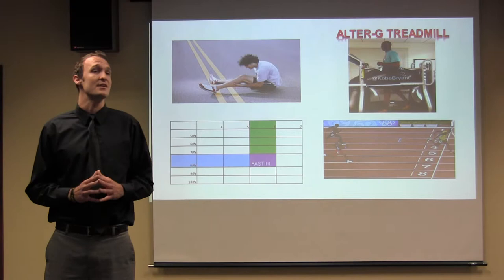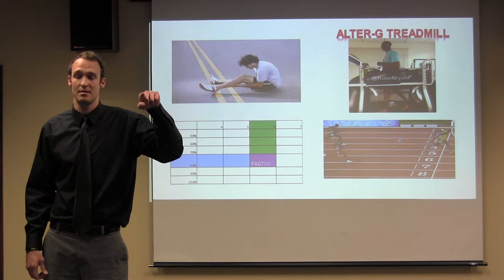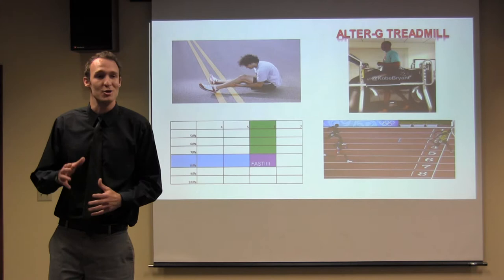The answer is presented in a simple, easy-to-use reference conversion table where you pick the speed that you want to run at outside, the body weight percentage you're currently running at on the Alter-G treadmill, go like this, and like magic you have the speed you're required to run at to get an equivalent workout.